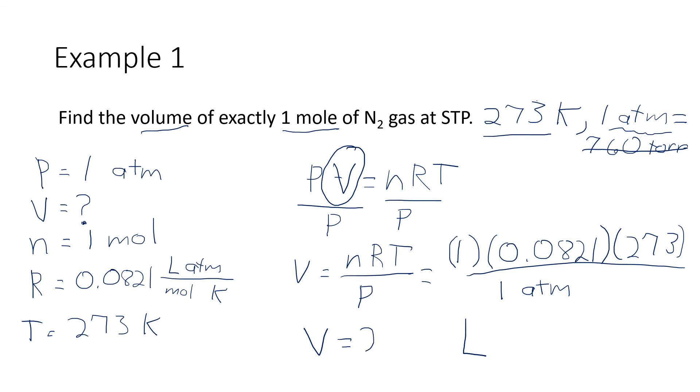But anyway, running that through the calculator gives a volume of 22.4 liters. Does that number look familiar? Oh, yeah, that was on the radiation sign. Because we said that at STP, one mole of a gas has a volume of 22.4 liters. Now you've seen the equation from whence the 22.4 liters came.